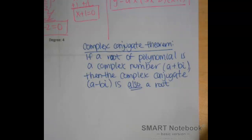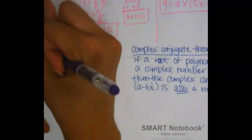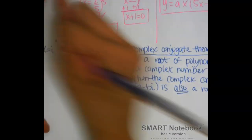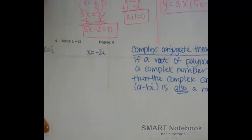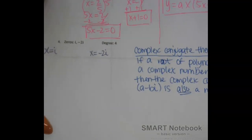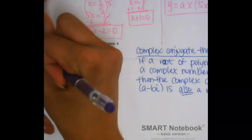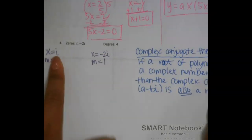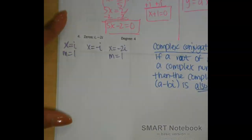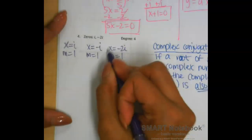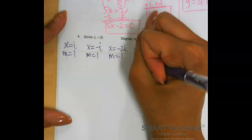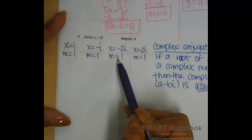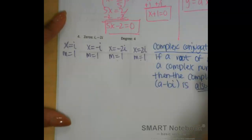You have two given x-intercepts: x equals i and x equals negative 2i, each with multiplicity 1. The degree is 4, but so far you only have two zeros accounted for. By the complex conjugate theorem, the missing zeros are x equals negative i (the conjugate of i) and x equals positive 2i (the conjugate of negative 2i), each with multiplicity 1. Checking: 1 plus 1 plus 1 plus 1 equals 4 — that's the correct degree.